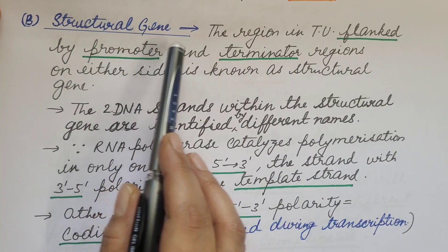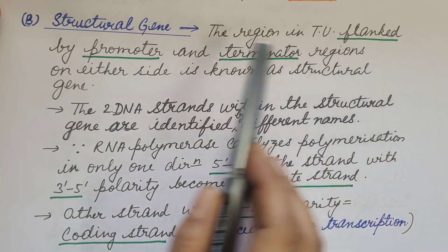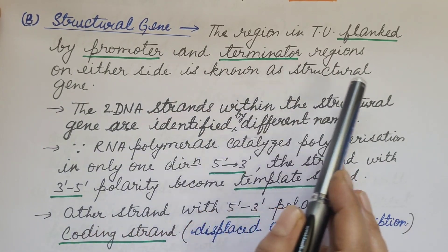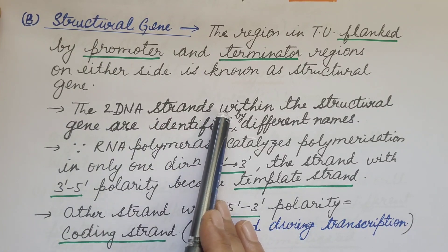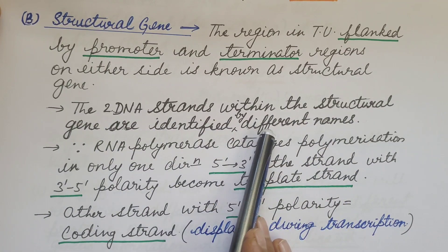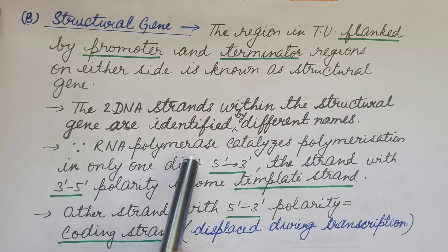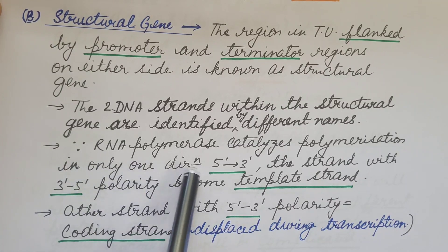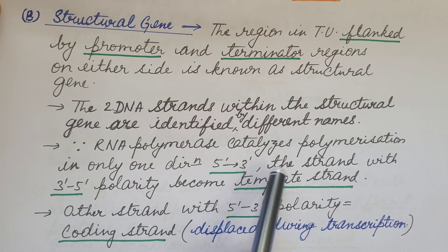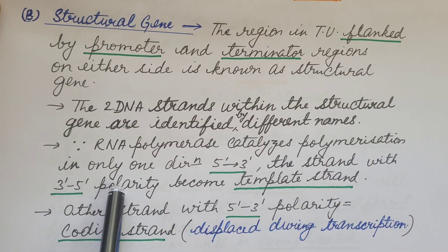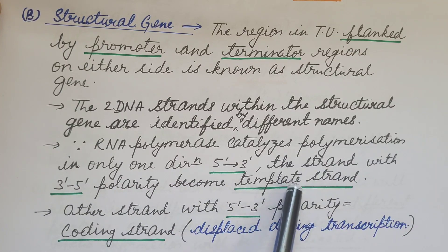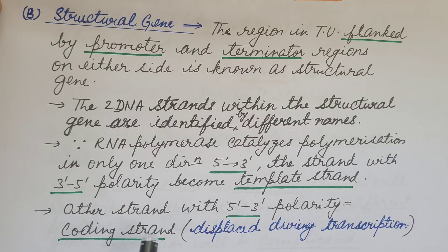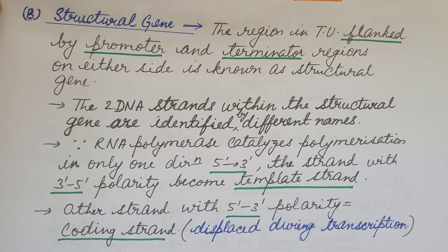Second is the structural gene. The region in the transcription unit flanked by promoter and terminator regions on either side is known as the structural gene. The two DNA strands within the structural gene are identified by different names, because RNA polymerase catalyzes polymerization in only one direction — that is, 5' to 3'. The strand with 3' to 5' polarity becomes the template strand, while the other strand with 5' to 3' polarity is known as the coding strand, which is displaced during transcription.